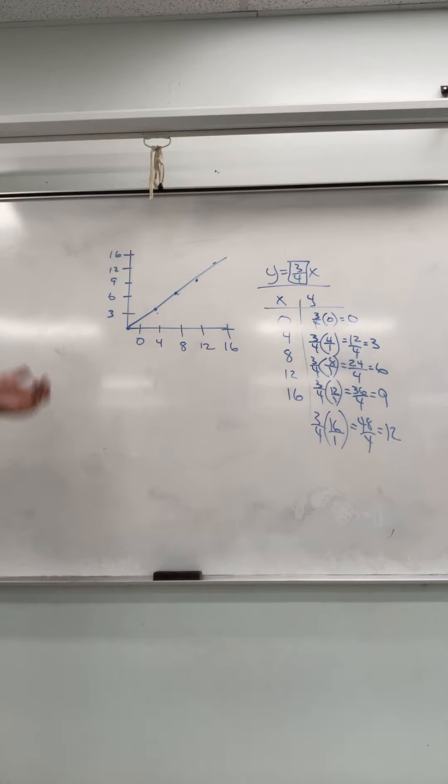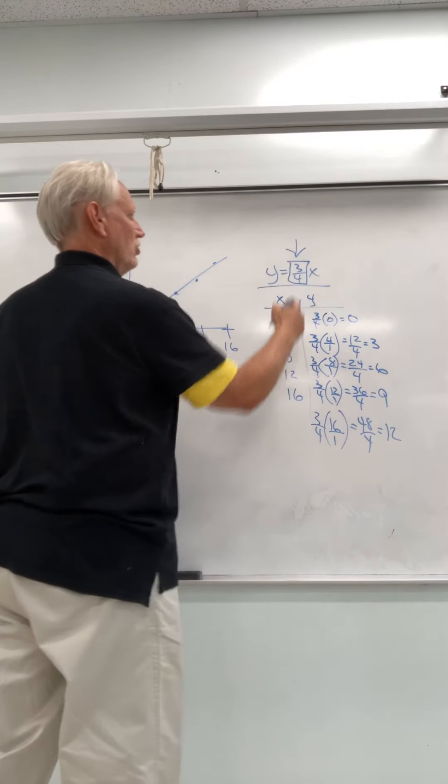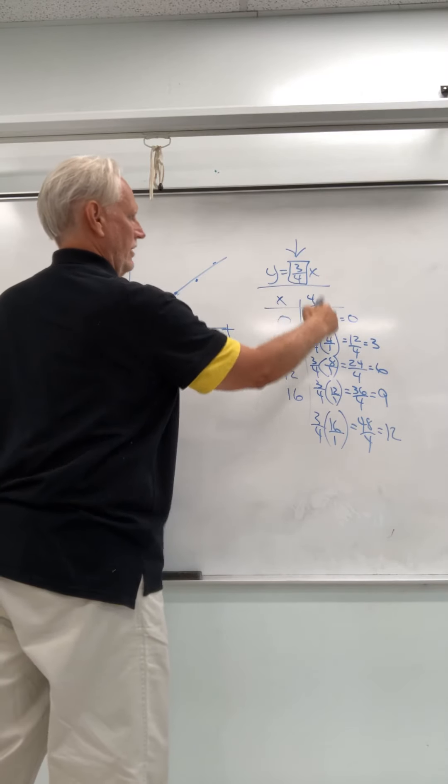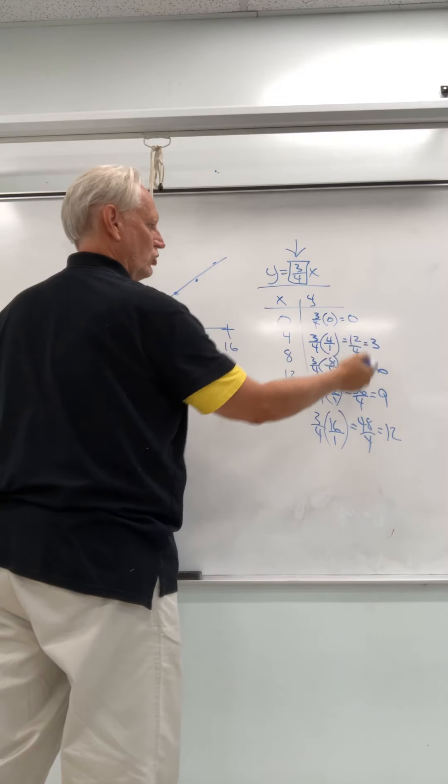So my constant of proportionality was 3 fourths. I took 3 fourths times each of the x's, and you can see that right here. And then I got my output, which was y.